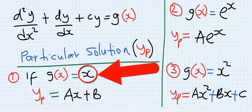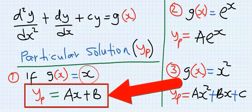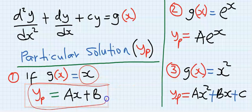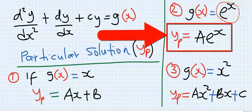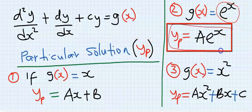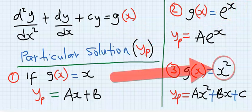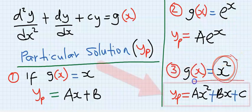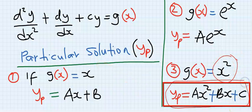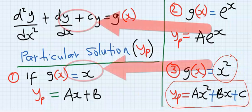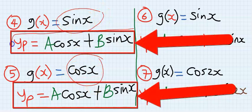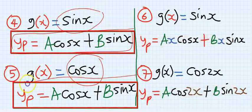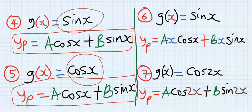If the right-hand side is just x, then the particular solution is going to be ax plus b. If the right-hand side is an exponential function, then the particular solution takes the corresponding exponential form. If the right-hand side is a trigonometric function, then the particular solution involves both cos and sin terms — and this is the same for sin and cos.